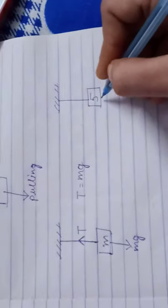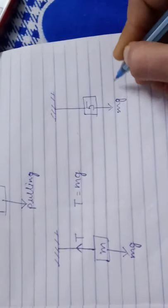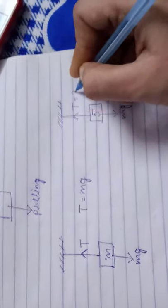For an example, we have a 5 kilogram block. The mg force is downward. What is the tension?